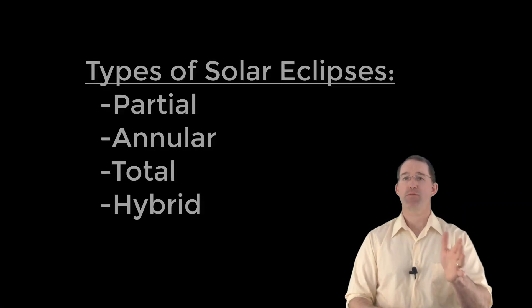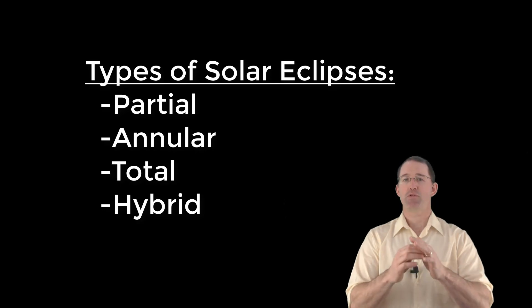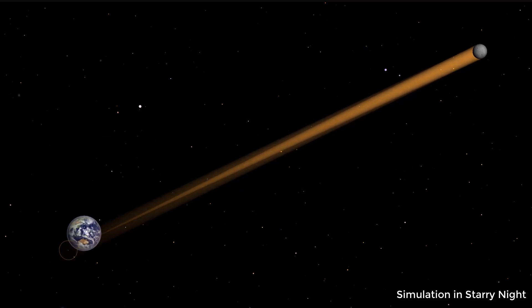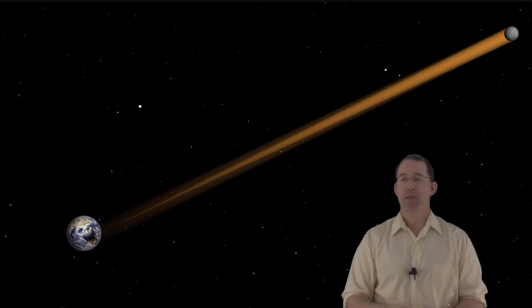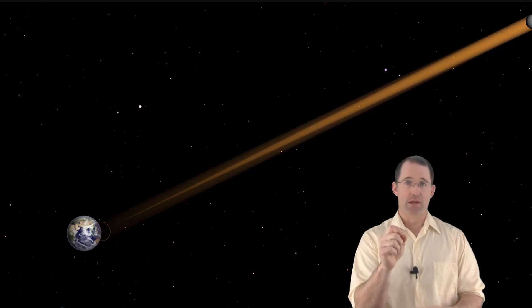Here's a quick list of the four different types of solar eclipses. Solar eclipses are all about geometry. The moon casts a shadow in space when the sun, moon, and earth all line up, and that's when you get a solar eclipse. The exact type of eclipse depends on how perfect or how slightly imperfect that alignment is.